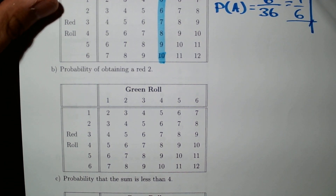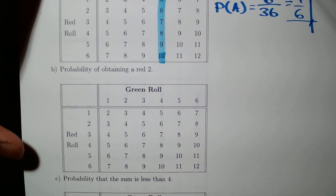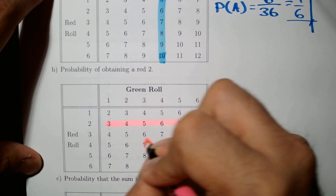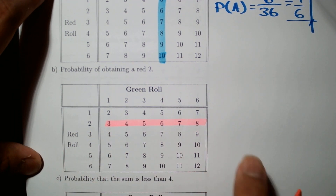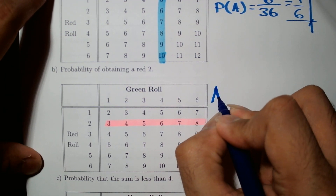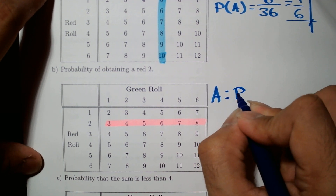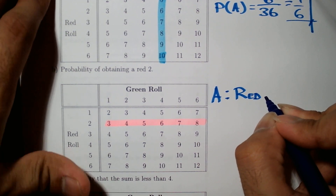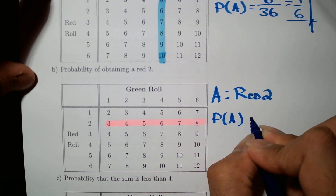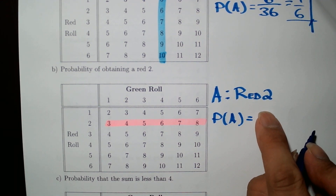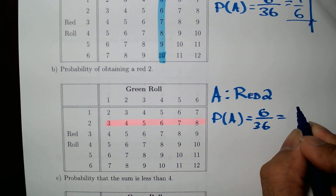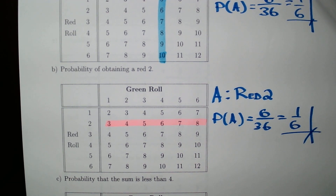What is the probability of obtaining a red 2? I'll highlight all the possible red 2 outcomes. Let's define this as event B: red 2. The number of successes is 6 out of 36 total possible outcomes — the same answer as before.